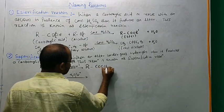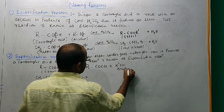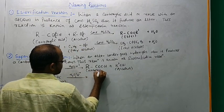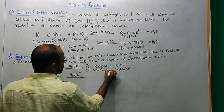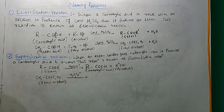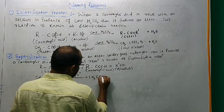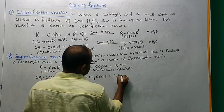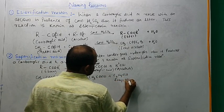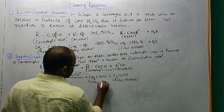Saponification reaction is hydrolysis, addition of water. RCOOH plus ROH, ROH is an alcohol, RCOOH is a carboxylic acid. For example, CH3-COOH plus C2H5OH, this is ethyl alcohol, this is acetic acid.